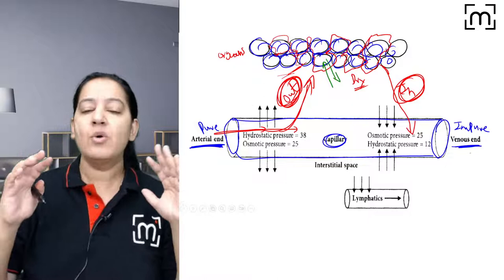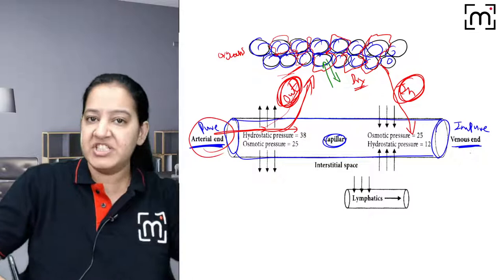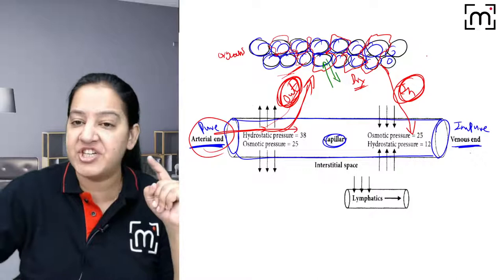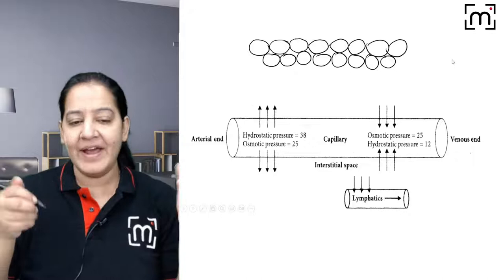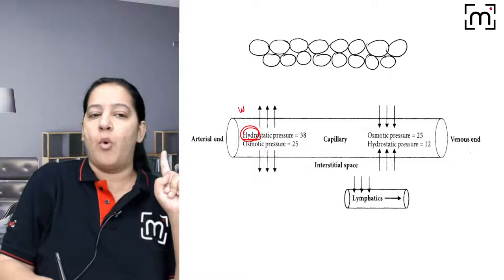How does the fluid know when to come out at the arterial end and when to go back at the venous end? It is the pressure — pressure changes drive the fluid. There are two types of pressures acting in a capillary. The first is hydrostatic pressure. 'Hydro' means water — blood is made up of water (plasma), so the pressure due to water is hydrostatic pressure. It is always outward — that is a rule.